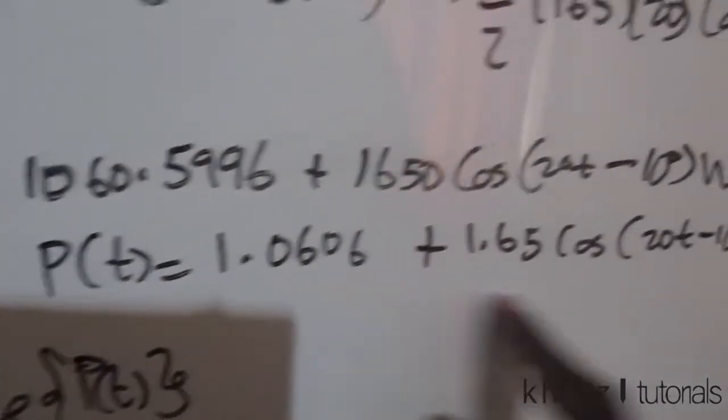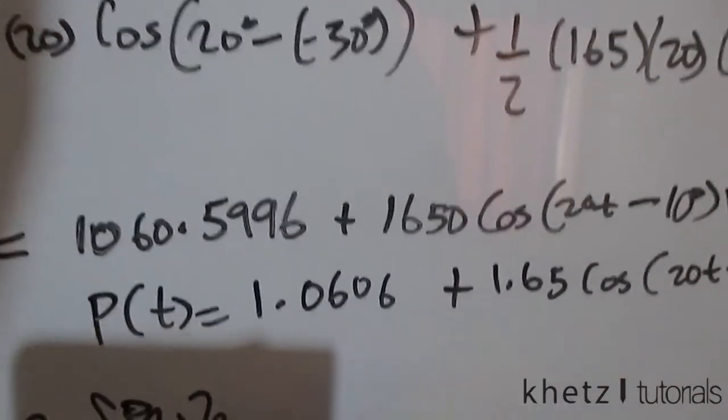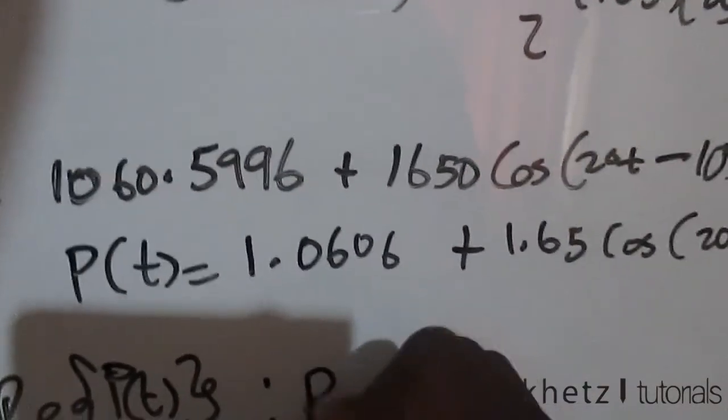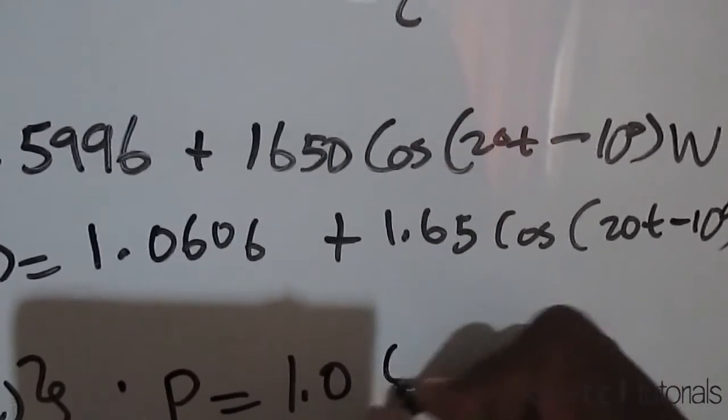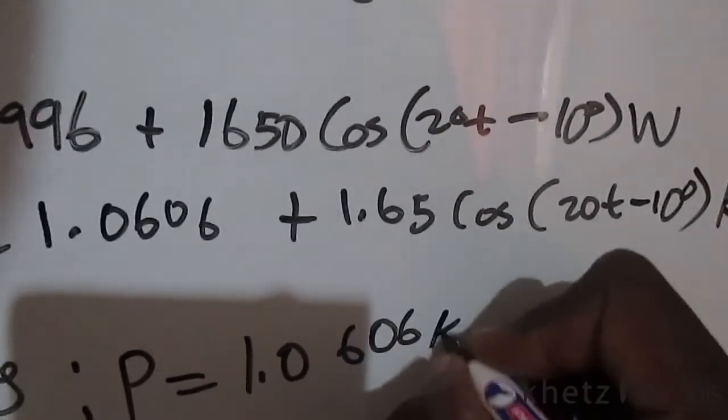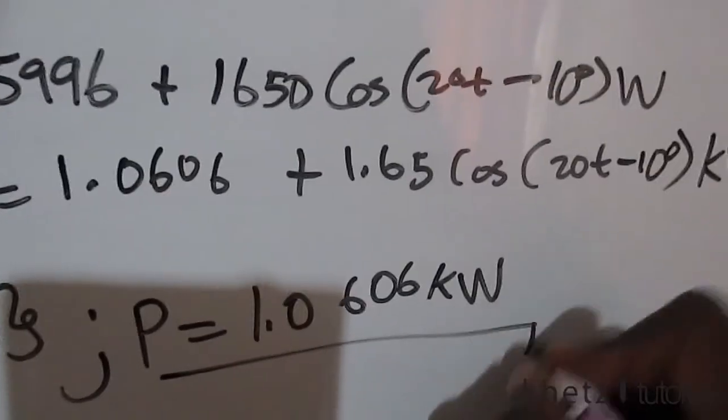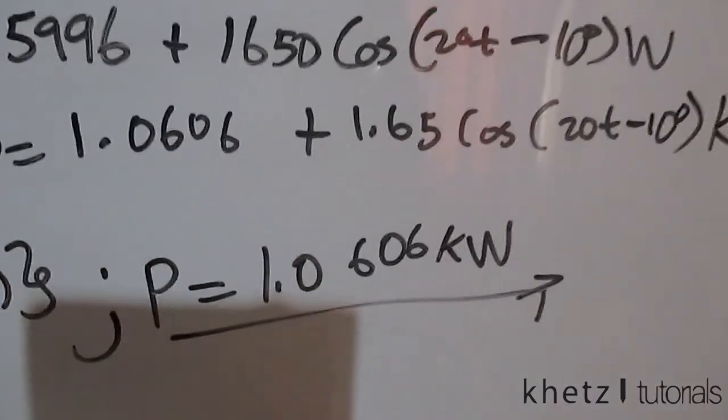Now let's look at the real part. The real part is only this section, which means our average power is 1.0606 kilowatts. And that is basically how you answer this question.